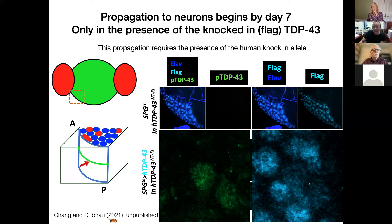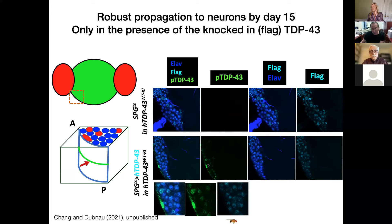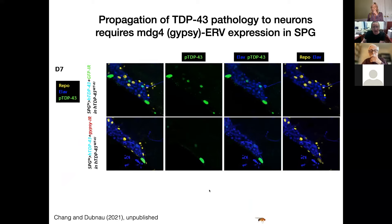This propagation requires the presence of the knocked-in humanized allele expressed within the glial cells. This is even more dramatic when we look 15 days after induction. Here we are inducing high levels within this glial cell and see pretty massive accumulation of hyperphosphorylated TDP-43 within the cytoplasm of this surface glial cell. We also begin to see much stronger levels of accumulation at some distance from the glial cell within nearby neurons.